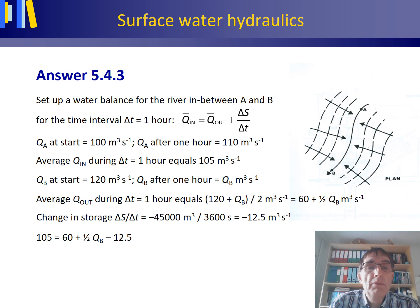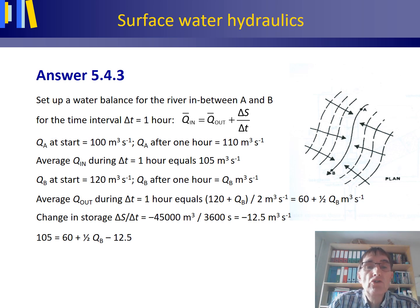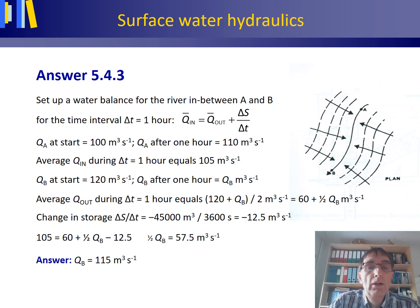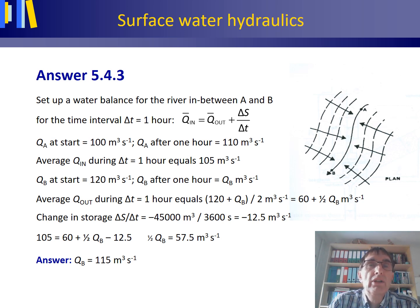Now things have become easy because we know all the values. 105 is the average inflow. 60 plus half of QB is the average outflow. And the change in storage delta S over delta T is minus 12.5. We have one equation with one unknown, which we can easily solve. Half of QB equals 57.5 cubic meters per second, so QB after one hour is 115 cubic meters per second.